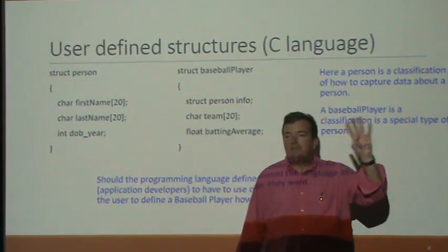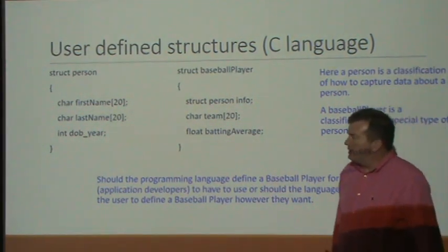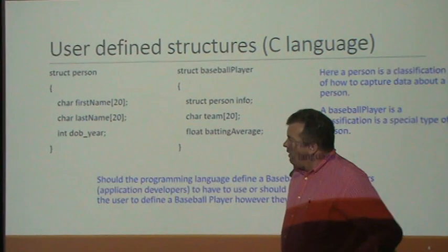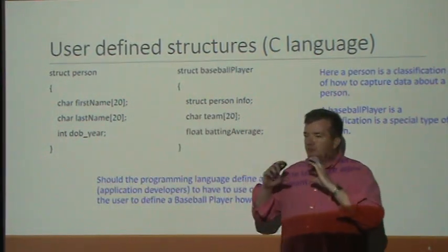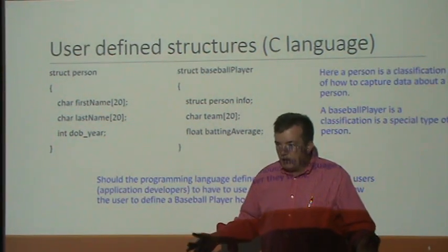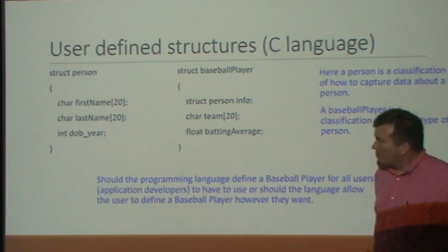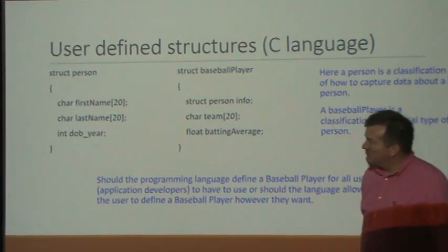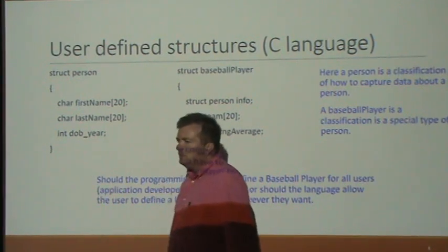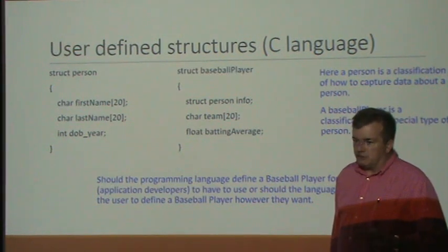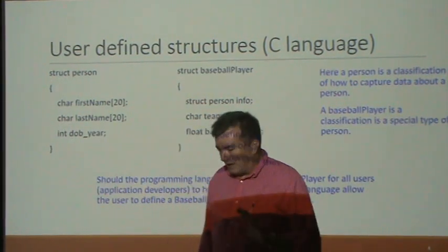Should Python have a pre-canned definition of a person, or should it allow you to define a person however you want — depending on your application? A user-defined structure lets you say 'I'm going to define a person.' The programming language C, which came out in 1972, lets you create a structure with the keyword 'struct' — short for structure. If you typed out the full word 'structure,' you'd get a compiler error.